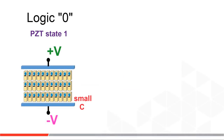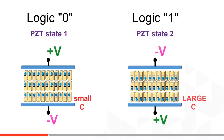Let a logic zero be represented by PZT position one — low capacitance — and a logic one by PZT position two — high capacitance. Take away the voltages and these PZT positions stay fixed. Write your ones and zeros to the FRAM, unplug the system, put it on a shelf, come back in 10 years, and your ones and zeros will still be there.